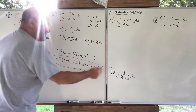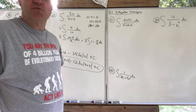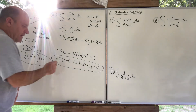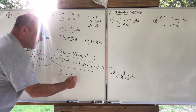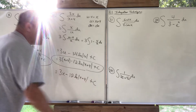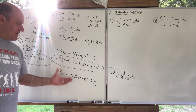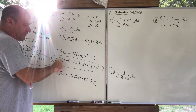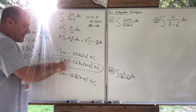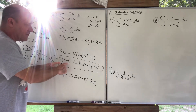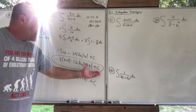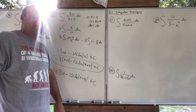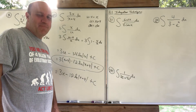If you look this up in the back of the book, they might have it as 3x − 12·ln|x + 4| + C — slightly different. What happened? They distributed the 3 to get 3x + 12, but that extra +12 is just a constant, so it gets absorbed into the arbitrary constant C. That's why the answers differ but are both correct.